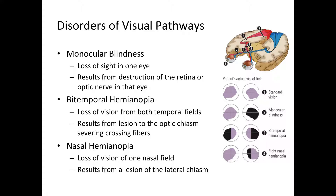If the pituitary tumor grows, it can put pressure on the medial part of the chiasm, resulting in loss of lateral vision — bitemporal hemianopia. Next is nasal hemianopia, which can be either right or left. In this example, right nasal hemianopia results from a lesion to the lateral optic chiasm, causing loss of vision in the nasal field. A lesion on the other side produces nasal hemianopia on the opposite side.